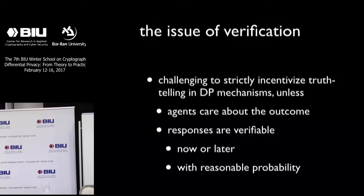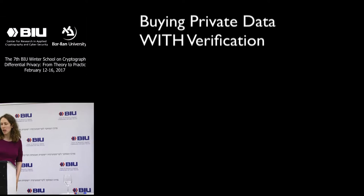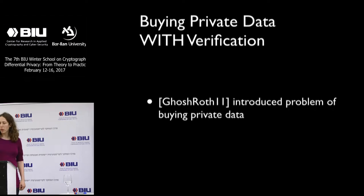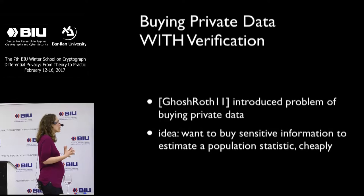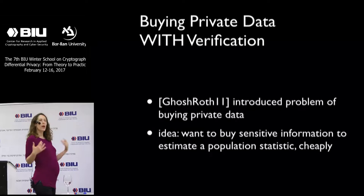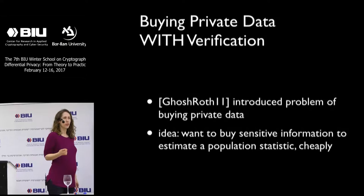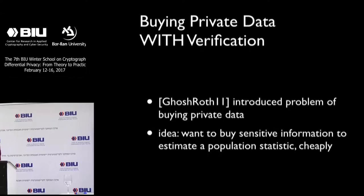Let's start in the world where we do have the ability to verify people's data. In this context, there's a very nice paper of Goshen-Roth which really introduced the problem of buying private data — one of the first papers that forced us to grapple with these issues. The key idea is that we want to buy sensitive information to estimate a population statistic accurately and cheaply. We're back in the world where each person has a bit, and we want to understand the prevalence of ones in the room — we want to figure out who to buy these bits from and how to pay them, so that we have a pretty good sense of the prevalence without spending too much money.